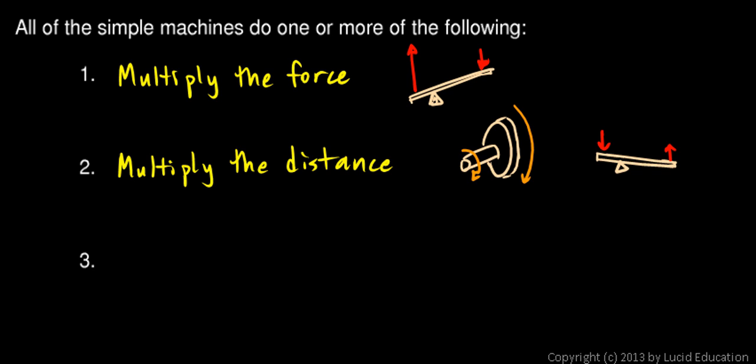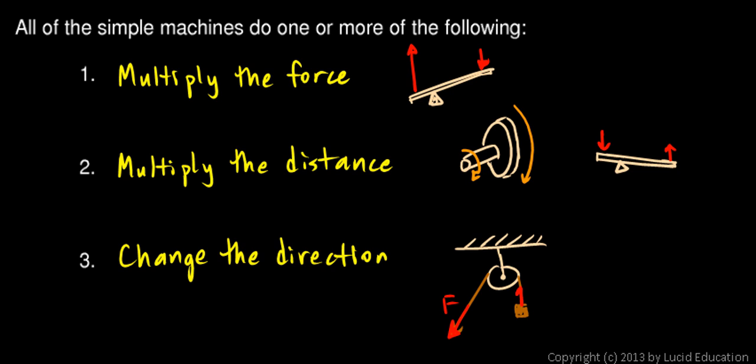And the third thing a simple machine can do is change the direction. And the example we saw of that was a pulley. If you have a pulley hanging from the ceiling, for example, and you're pulling on it, there's a rope and an object, and you pull this way, you exert a force in this direction, and that results in a force on the mass over here in a different direction. So the pulley can change the direction.